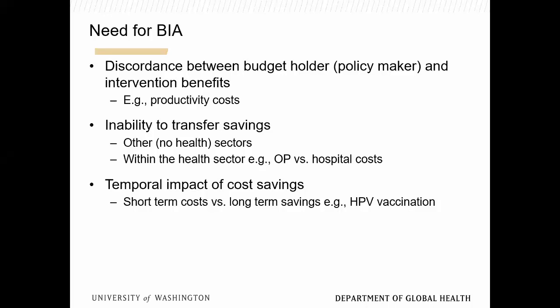You can't transfer savings across departments. If someone runs an outpatient clinic and treating early reduces hospital costs, they still have their fixed budget. You can't even transfer between sectors — for example, if you reduce alcohol use disorder, there are benefits to the policing department, but the police department can't give you those savings to apply to your healthcare budget. So that discordance is a key challenge.